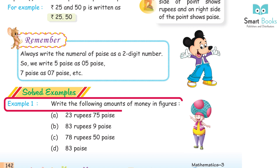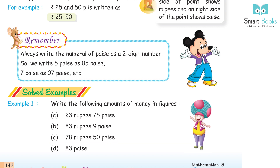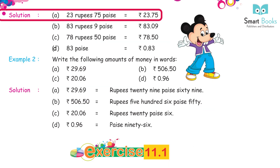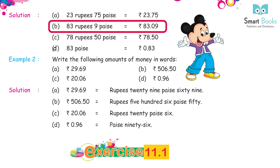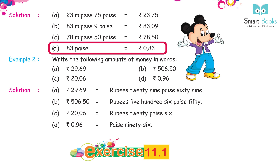Solved examples. Write the following amounts of money in figures: a. 23 rupees 75 paise equals Rs. 23.75. b. 83 rupees 9 paise equals Rs. 83.09. c. 78 rupees 50 paise equals Rs. 78.50. d. 83 paise equals Rs. 0.83.